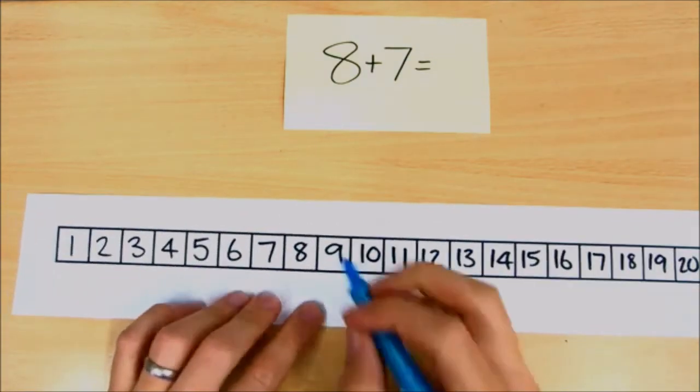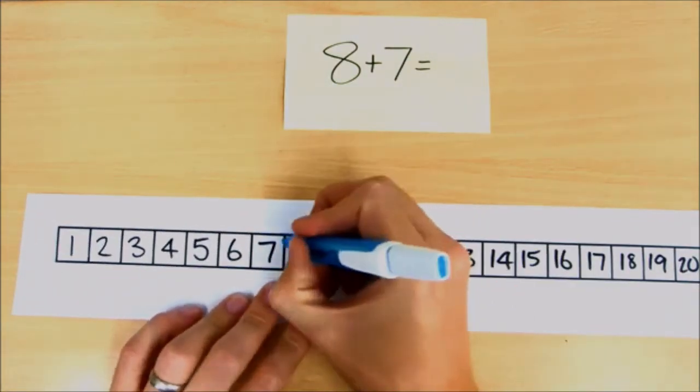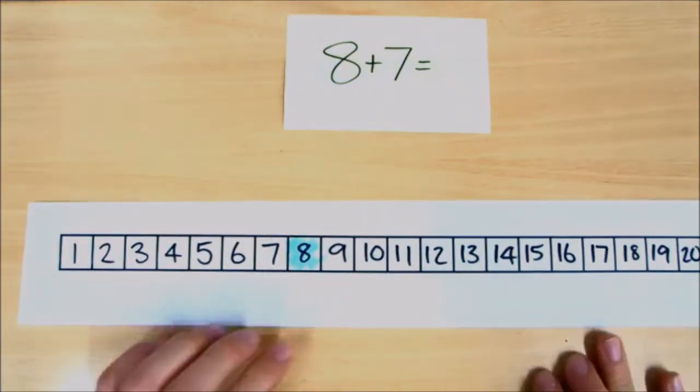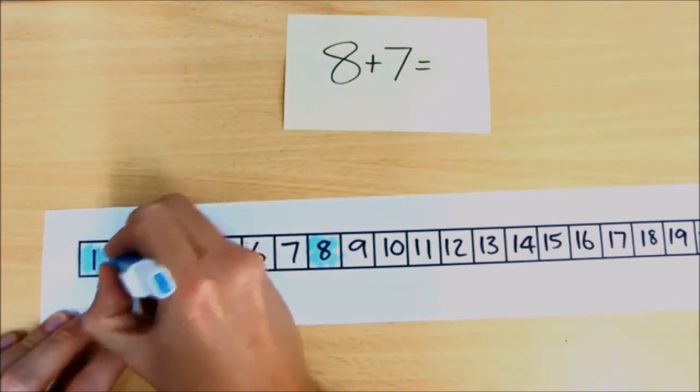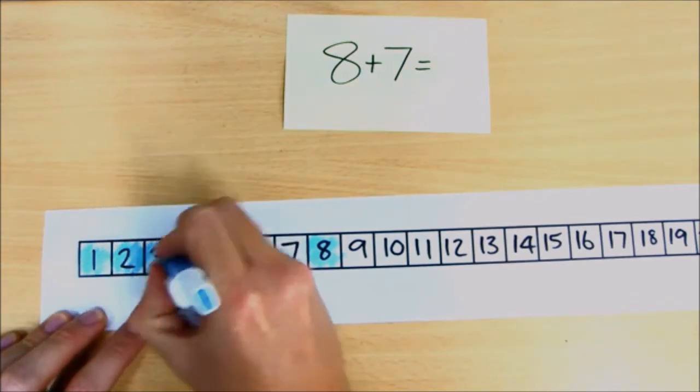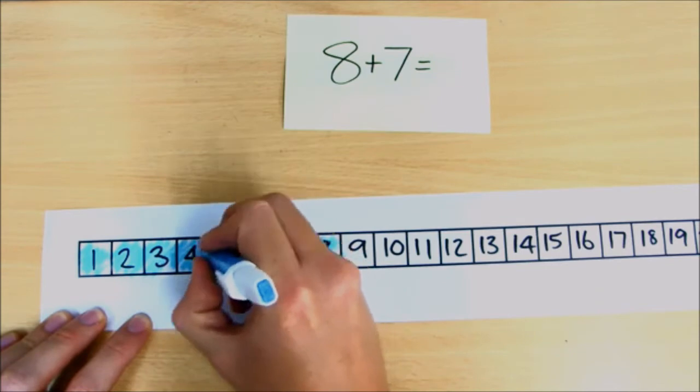So the best thing to do here is to obviously find the number eight and to color that one in there. And then what we'll do is we'll color the rest of those. Obviously I'm doing this really quickly. You'll take a little bit more care when you do this so it looks a lot neater and a lot nicer than this one.